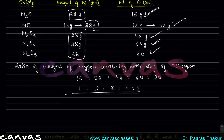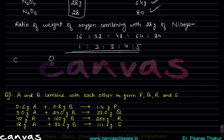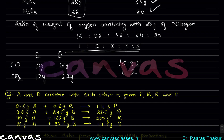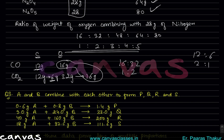Another example with carbon and oxygen forming CO and CO2: In CO — carbon 12 gram, oxygen 16 gram. In CO2 — carbon 12 gram, oxygen 32 gram. Fixing carbon, oxygen is in ratio 16:32, that is 1:2. If we fix oxygen at 16 gram instead, CO2 requires halving oxygen to 16, making carbon 6 gram. So carbon amounts are 12 and 6, ratio 2:1 — again a whole number ratio. This proves the law of multiple proportions.